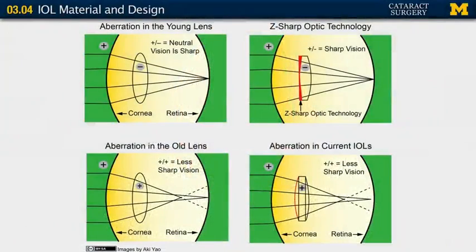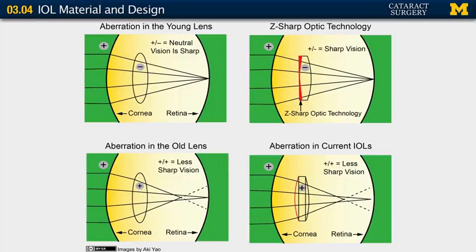Let me speak also about aspheric lenses, a relatively newer technology. In a young natural human lens, light images pass cleanly to one sharp point of focus on the retina regardless of what portion of the lens light passes through. As we age, there is more aberration and light comes to different points of focus within the eye as it passes through the peripheral versus central lens, degrading image quality. Traditional lenses are spherical and similarly cause light to come to focus at different points. The newer aspheric lenses account for this and allow light passing through both the periphery and center of the lens to come to one sharp point of focus on the retina, improving clarity.